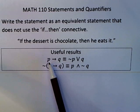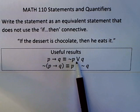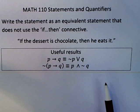So the first result says p implies q is equivalent to the negation of p or q. So the p is negated, the q is left alone.